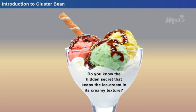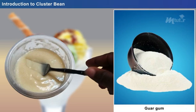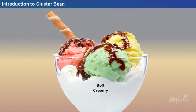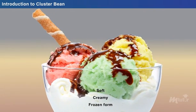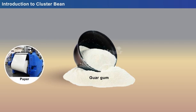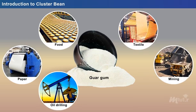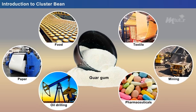Well, this is it. A powder called Guar Gum is added during the preparation process. That reduces the crystal formation and stabilizes the ice cream in soft, creamy, yet frozen form. Guar Gum not only finds its application in the ice cream industry, but is also widely used in several industries such as paper, food, textile, mining and oil drilling, pharmaceuticals, and lot more.